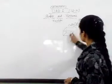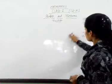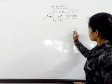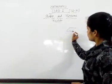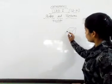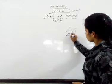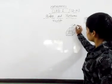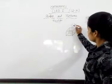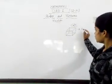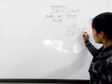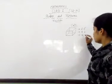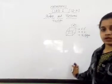Let's make another 3D shape. This is the cube shape. Like the cuboid, the cube has six faces, eight vertices, and twelve edges.